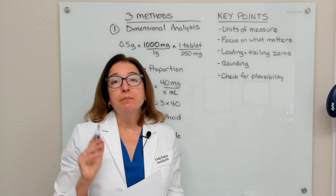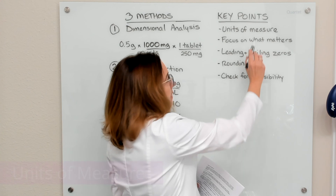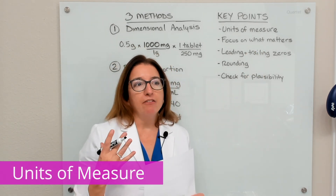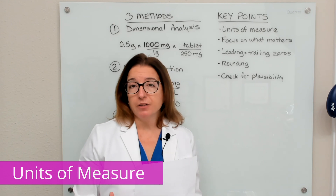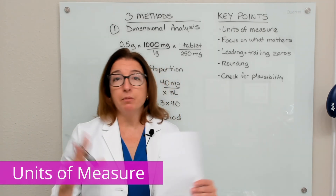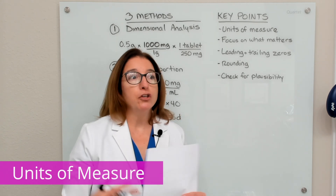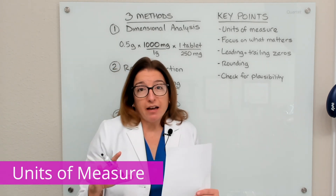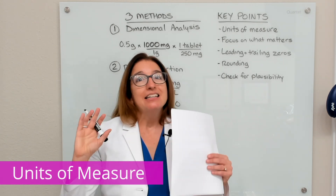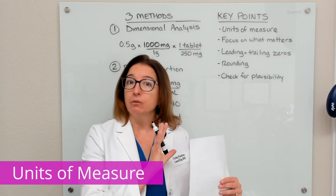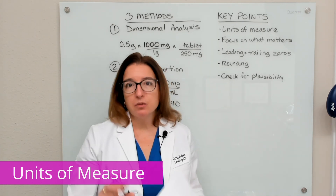Let's go over some key points to keep in mind as you solve dose calculation problems. The first is units of measure. You will see a lot of problems that have milligrams, grams, milliliters, and liters — those are really common units. However, you will sometimes encounter a different type of unit that maybe you're not familiar with, which can include micrograms, milliequivalents, or units. A lot of students will freak out when they see these, but you're going to solve the problem in the exact same way as you would with the units you're more familiar with, like milligrams. So don't freak out when you see milliequivalents or micrograms — we're going to solve things in the same way.